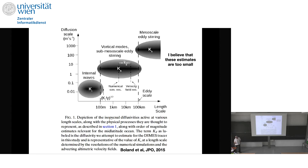Here are some estimates of that diffusivity constant from a paper by Bolin. Mesoscale eddy diffusivity has numbers like 10² to 10³ — these estimates are a bit too low, they were in a peer-reviewed published paper, but their estimates are a little too low. Sub-mesoscale and internal waves provide a lot of difference in diffusivity associated with different physical phenomena, though again these estimates I feel are too low.